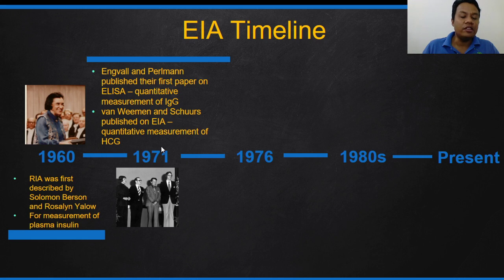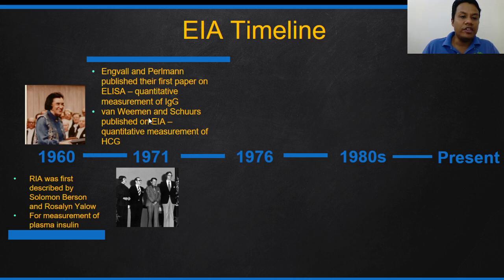In 1971, it was discovered that enzymes could be used in immunoassays. Engvall and Perlmann published their first paper on ELISA, focusing on IgG measurement. At the same time but in a different laboratory, Van Weemen and Schuurs published their first paper on enzyme immunoassay, performing quantitative measurement of HCG — the hormone detected when a woman is pregnant, produced by the amniotic sac.